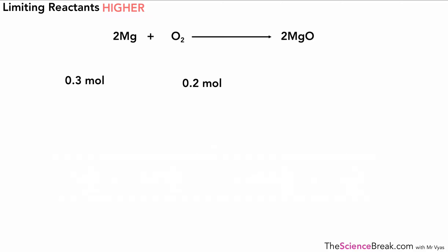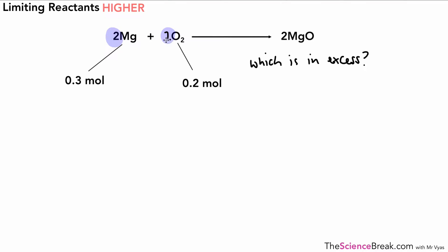Now let's look at this in a slightly different way. Here we've got a balanced chemical reaction for the reaction of magnesium with oxygen to make magnesium oxide. The question tells us we have 0.3 moles of magnesium and 0.2 moles of oxygen. Which one is in excess and therefore which is the limiting reactant? We can look at the ratio of moles in the balanced reaction — putting a 1 in front of the O₂ to help us. This tells us we need two quantities of magnesium to react with one quantity of oxygen — in other words, a ratio of 2 to 1.